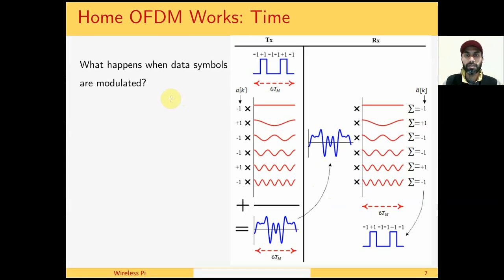Let us see as an example what happens when data symbols are modulated. We take the same example of 6 symbols and modulate them on a set of parallel waves. In this case, we call them subcarriers, on a set of parallel subcarriers. Symbol number 0 travels on subcarrier 0 over a sinusoidal wave of 0 frequency. Symbol number 1 travels on a sinusoidal wave of frequency f1, frequency f2, and so on. At the transmitter, they are all added together and sent on the air.